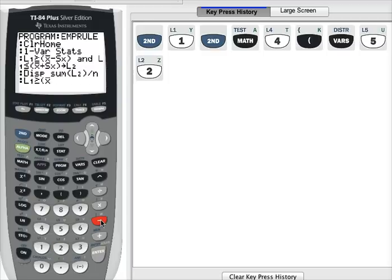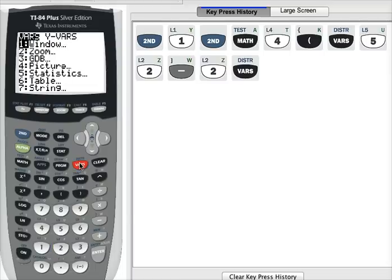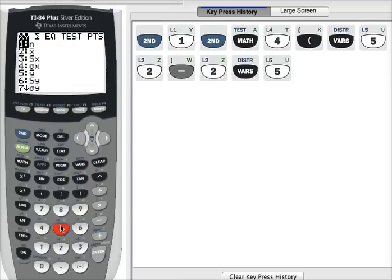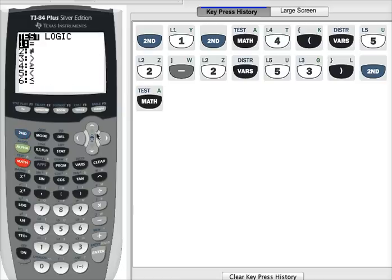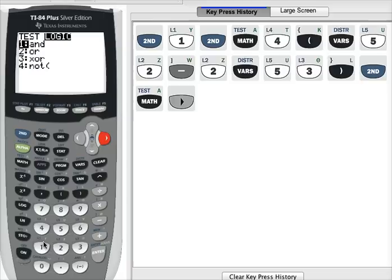Minus two standard deviations, so now I have to put in two, and then the standard deviation. Variables, option number five, standard deviation is three. Close the parentheses. To get my AND operator in there, I need second, math, right arrow, option number one.